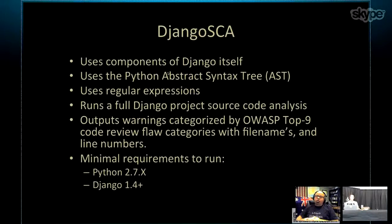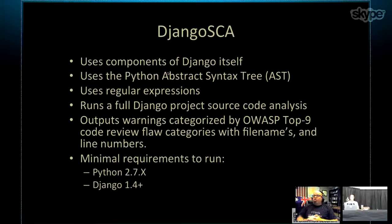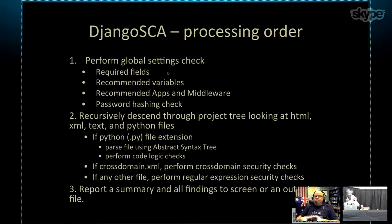Django SCA uses components of Django itself and the Python abstract syntax tree parser, and uses regular expressions heavily. It is designed to run a full Django project source code analysis recursively and output warnings categorized into OWASP Top 9 code review flaw categories with file names and line numbers. Requirements are literally just Python 2.7.x and Django as low as 1.3.1, though 1.4 is more common. Processing begins initially with a global settings check in settings.py, broken up into four different sections.